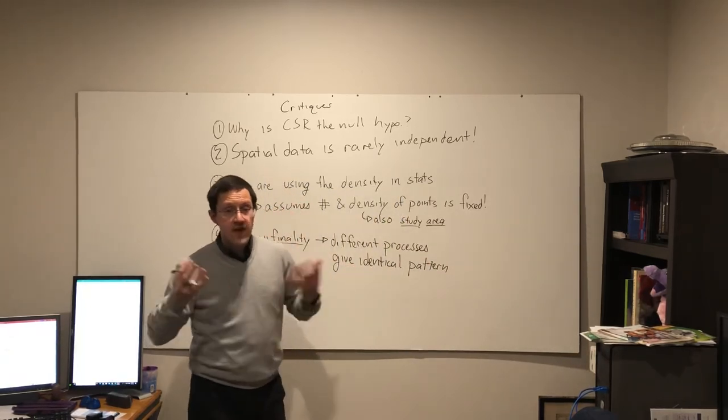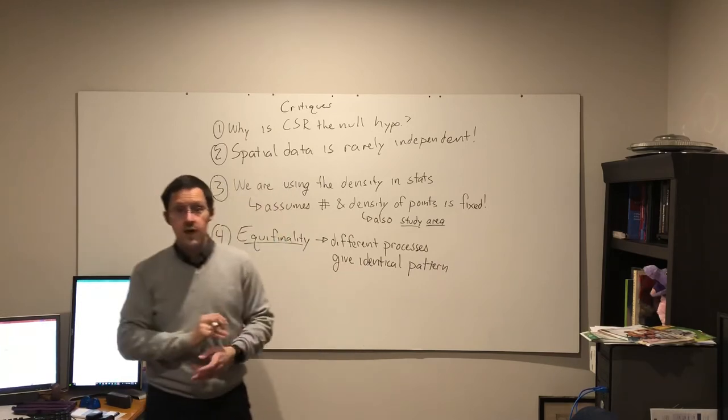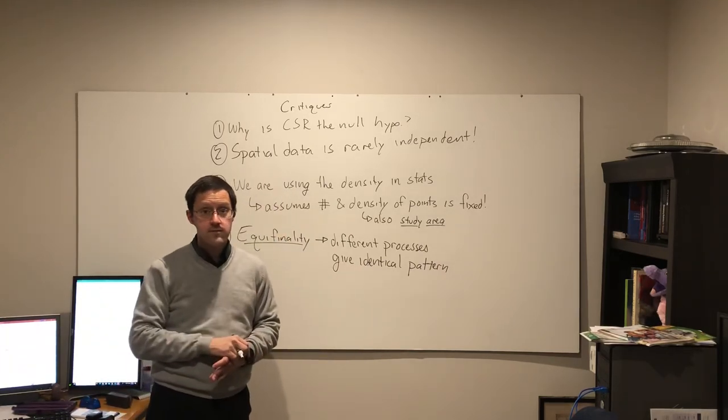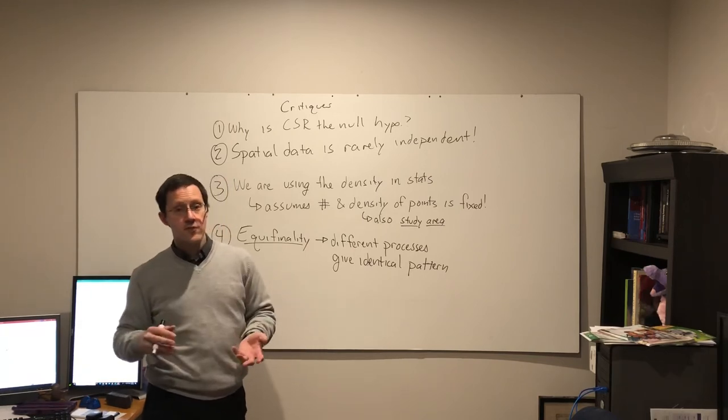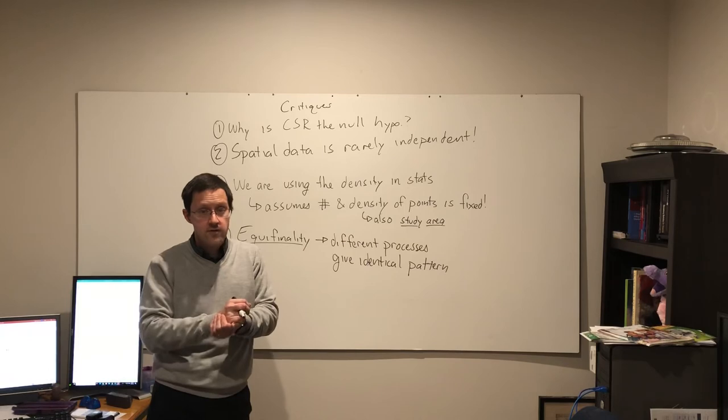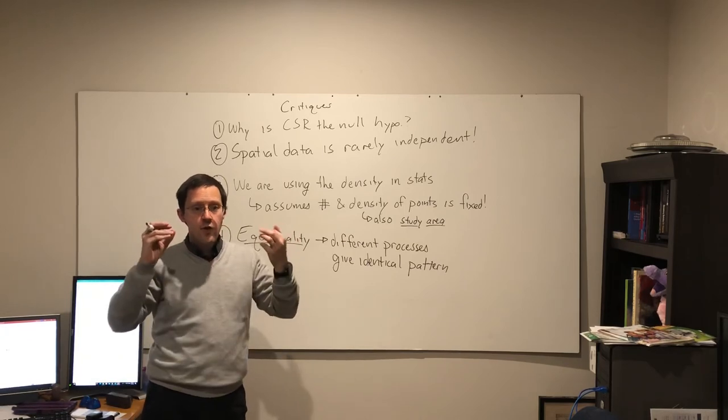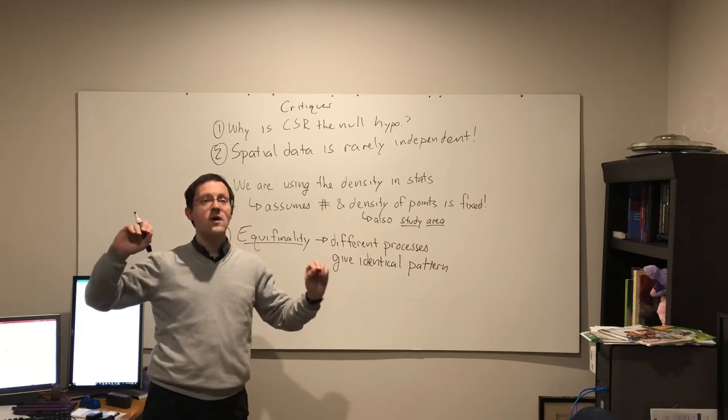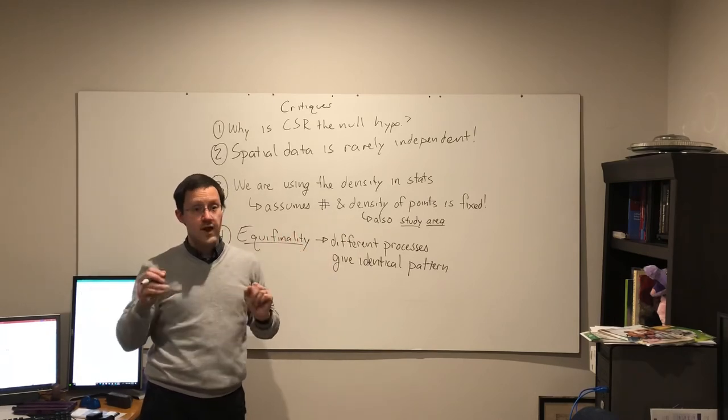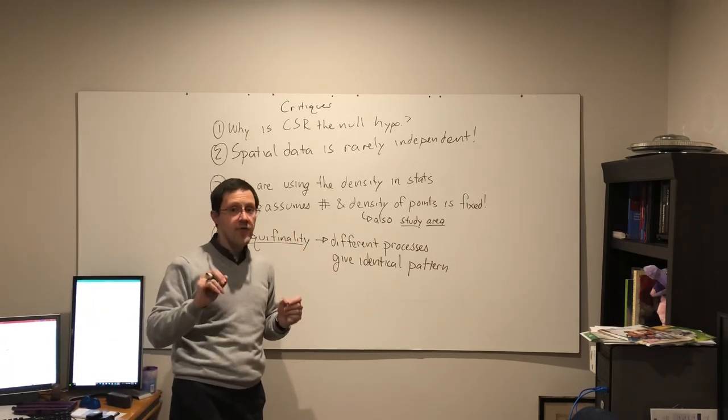Equifinality is the situation in which different processes can give the exact same pattern. So I find, for example, trees are clustered. Yes, my trees are clustered.